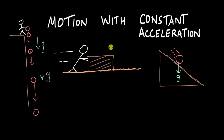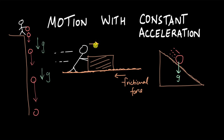For the case where the block is moving to the right with an increasing velocity on a rough surface, there will be a frictional force acting on the left side, and this person is pushing the box to the right with a force F. Whenever F is greater than the frictional force, the block will move to the right with an increasing velocity, or a constant acceleration.